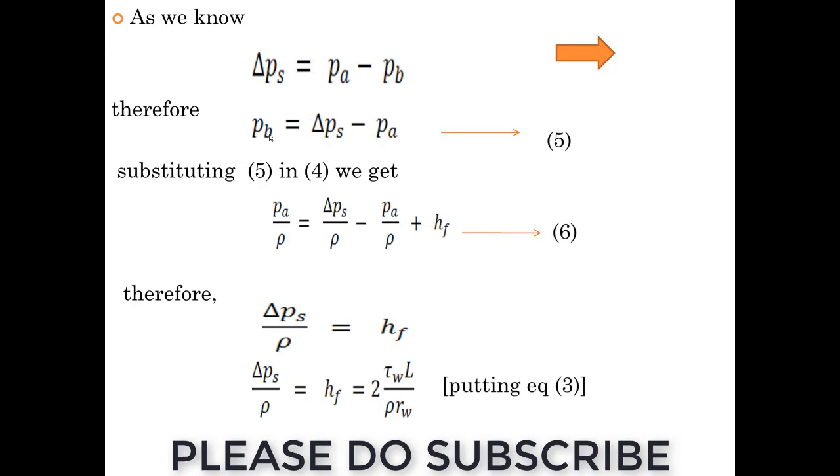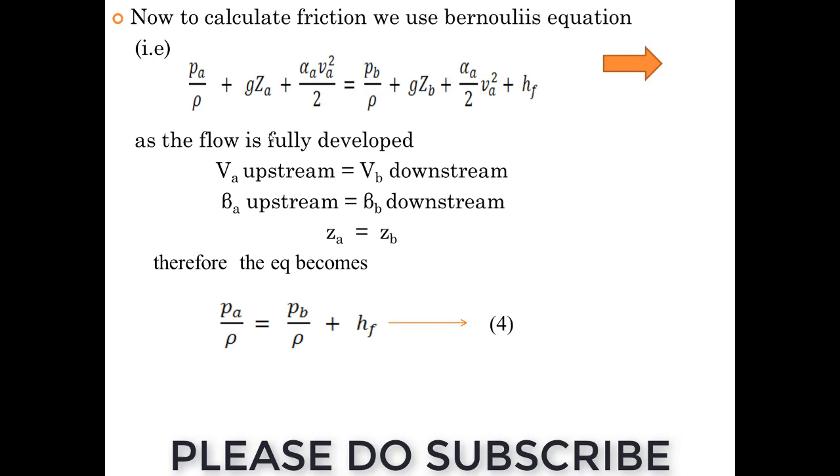We get PA by rho equals delta P by rho minus PA by rho plus HF. HF we came to know that delta P by rho equals HF, and that value is nothing but 2 tau L by rho Rw. This we will insert in equation 3. From equation 3, we have got this.